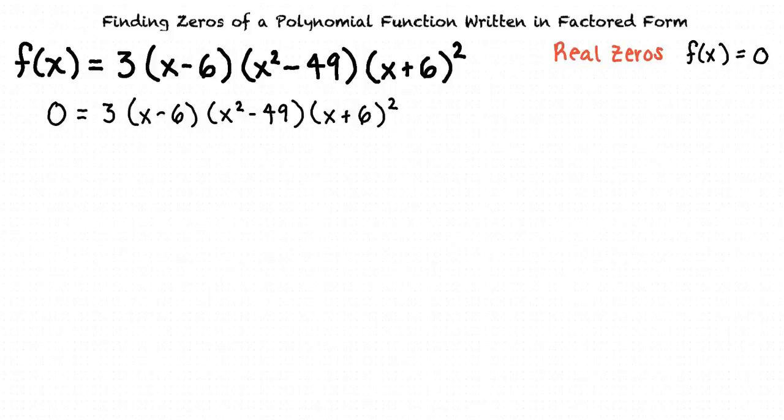When we plug in any value for x, each of these factors will equal some number, and those numbers will be multiplied to find the value of f(x). Remember that in order for the product of any numbers to equal 0, at least one of the factors must be 0. This means that in order for this function to equal 0, one of these factors must equal 0.